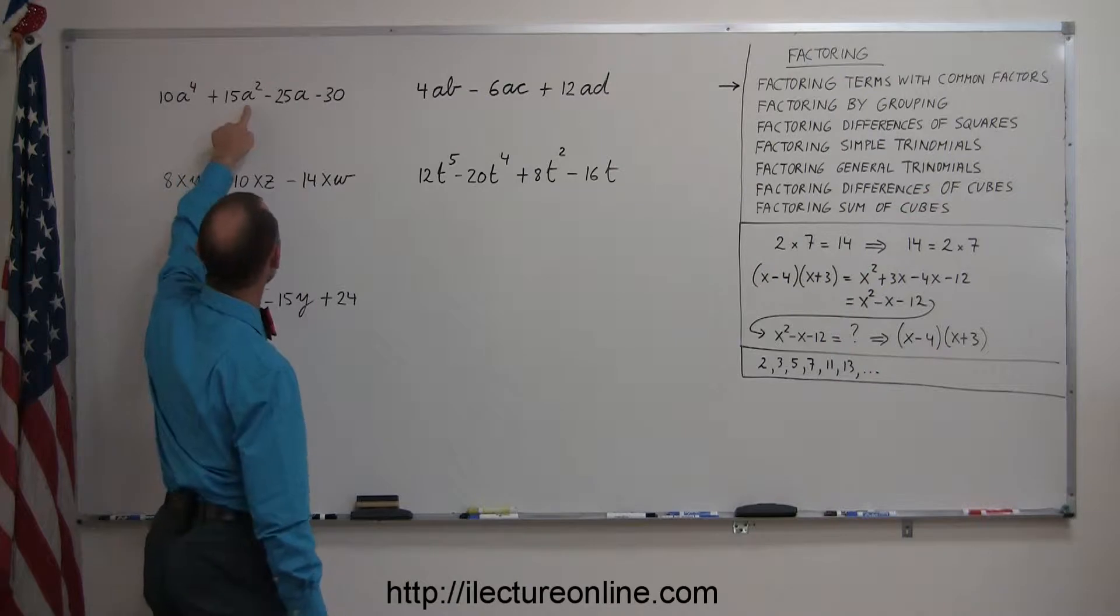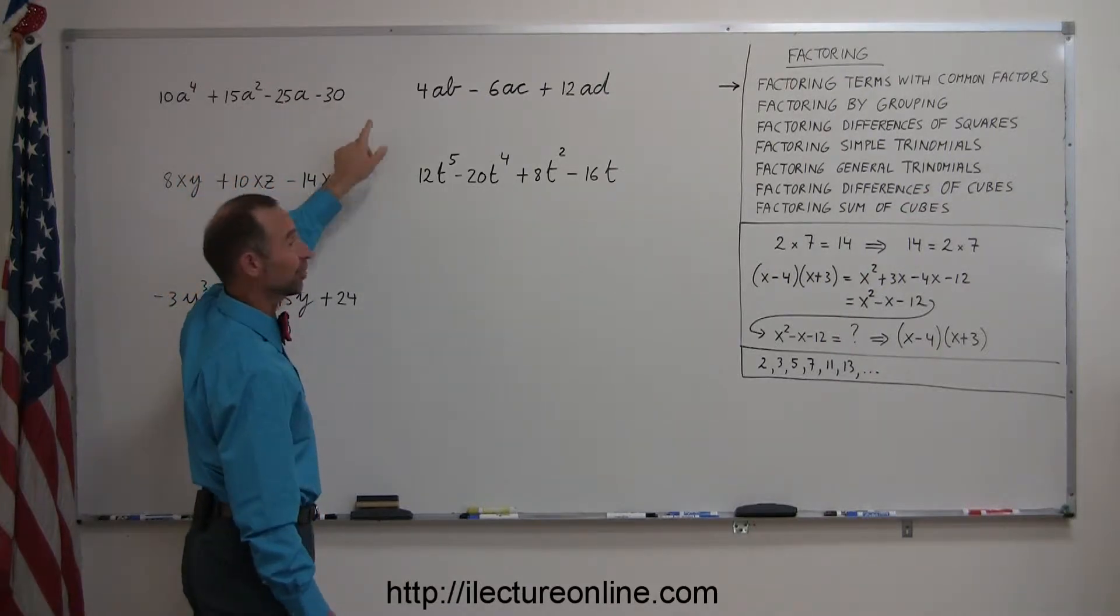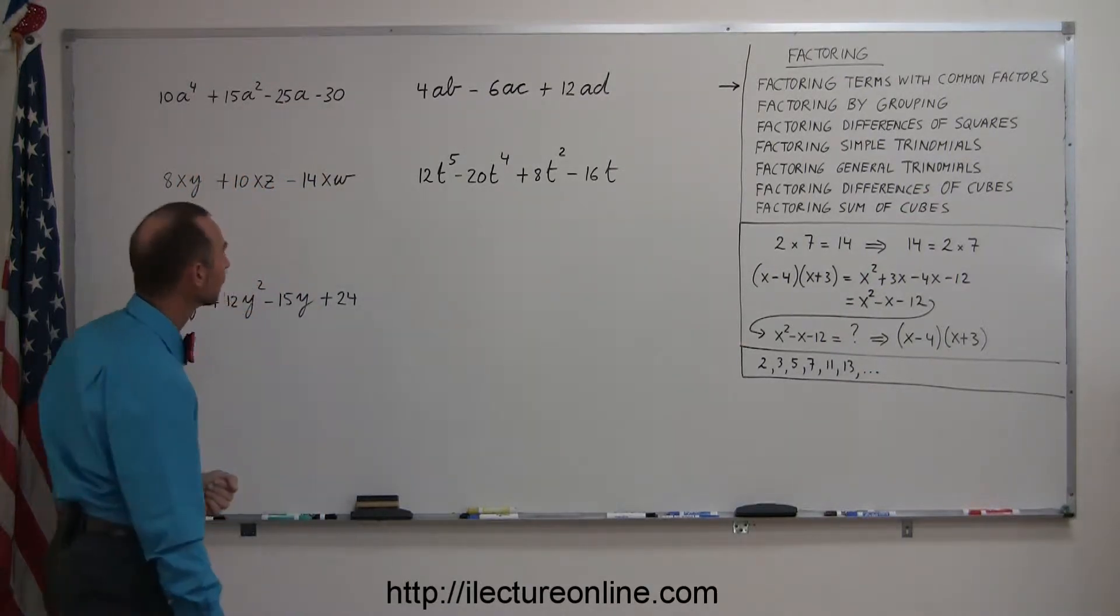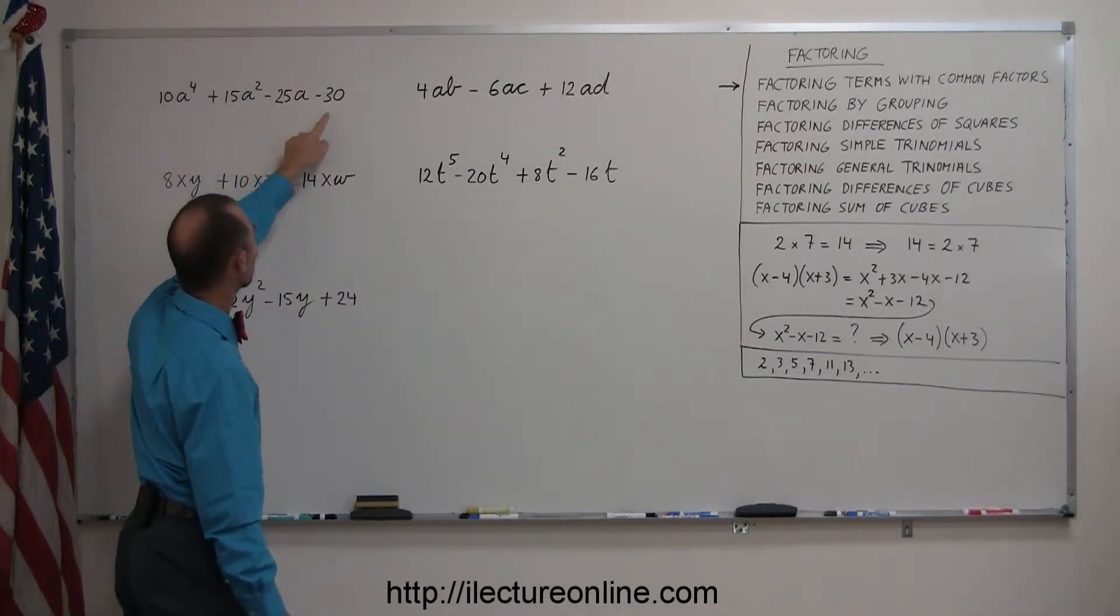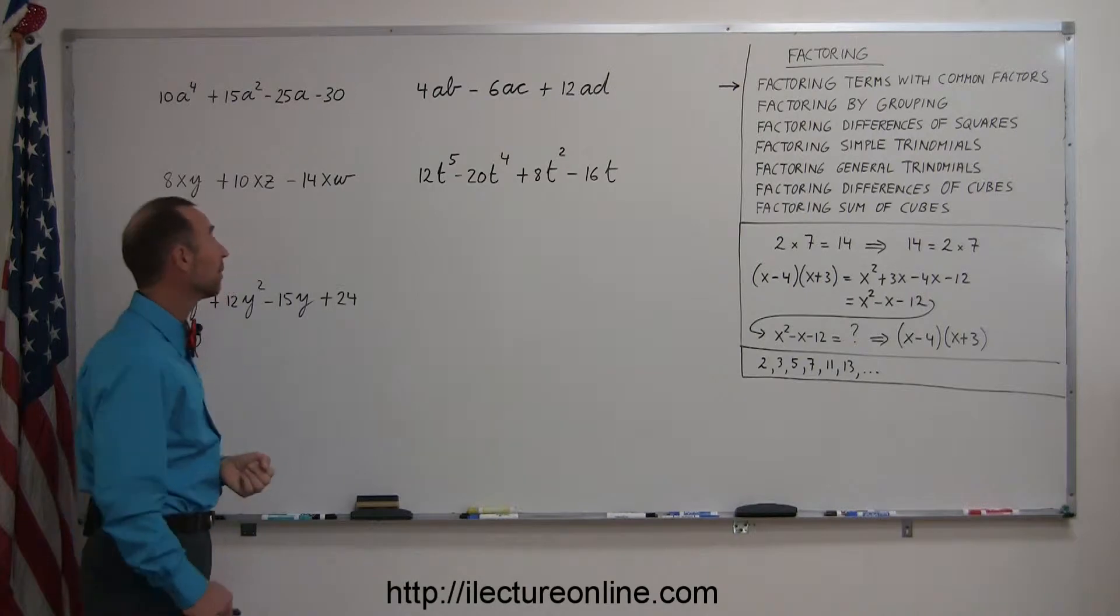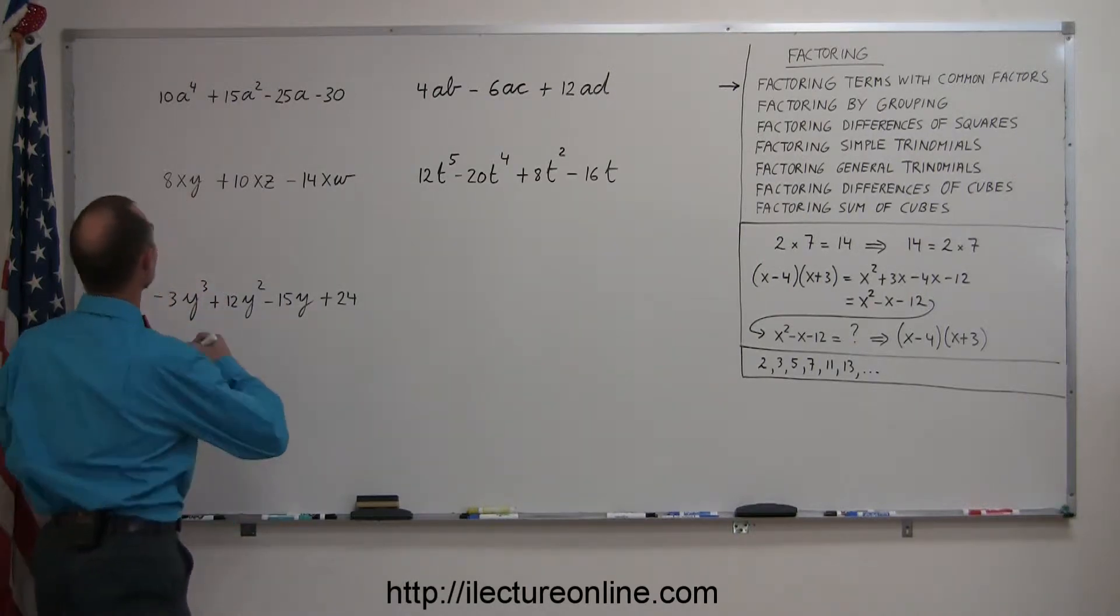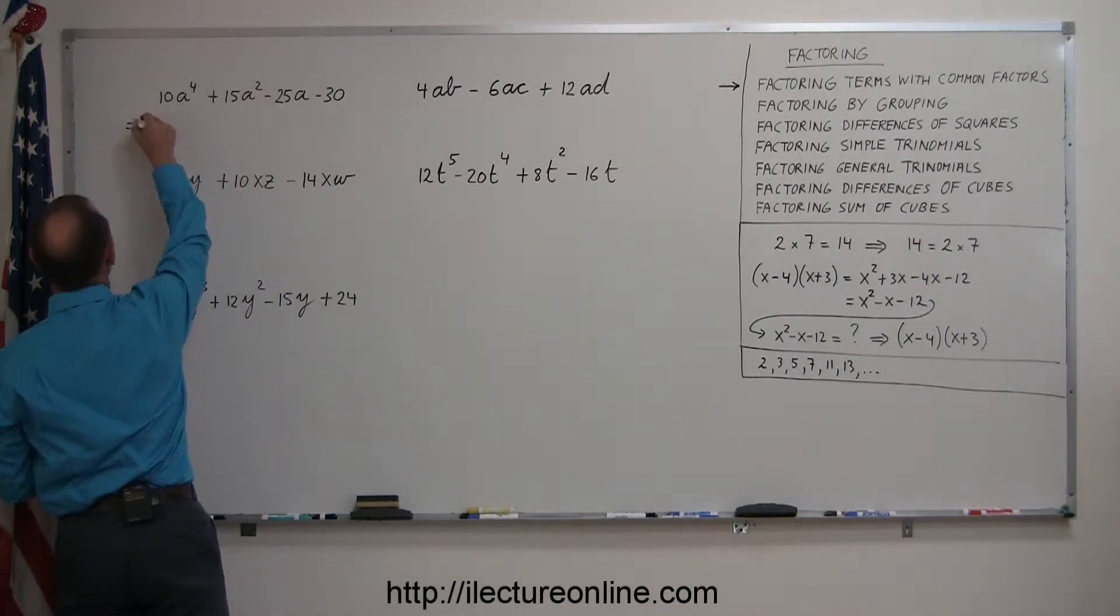We see an a over here, an a over there, an a over there, but not over there, so I cannot factor out an a. Number-wise, I look at these numbers and they either end in a zero or a five, which is an indication that they're all divisible by five, so I can factor out a five.